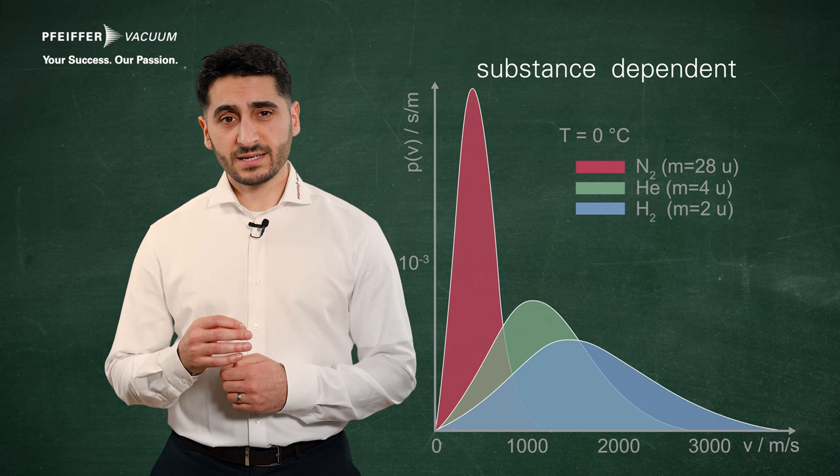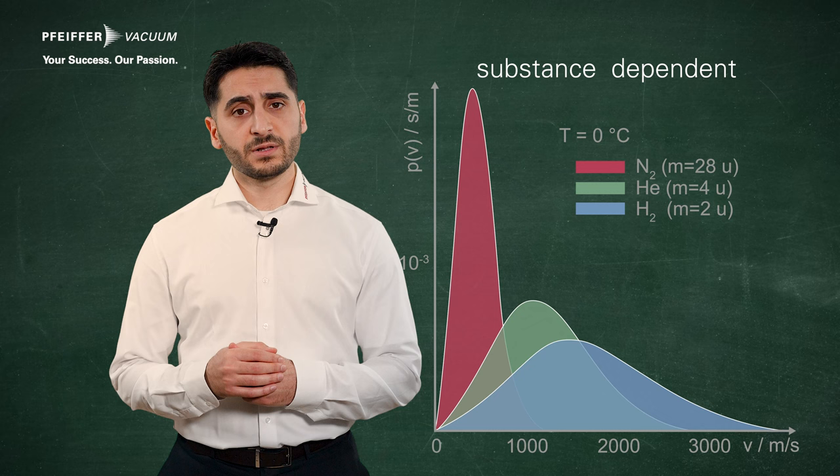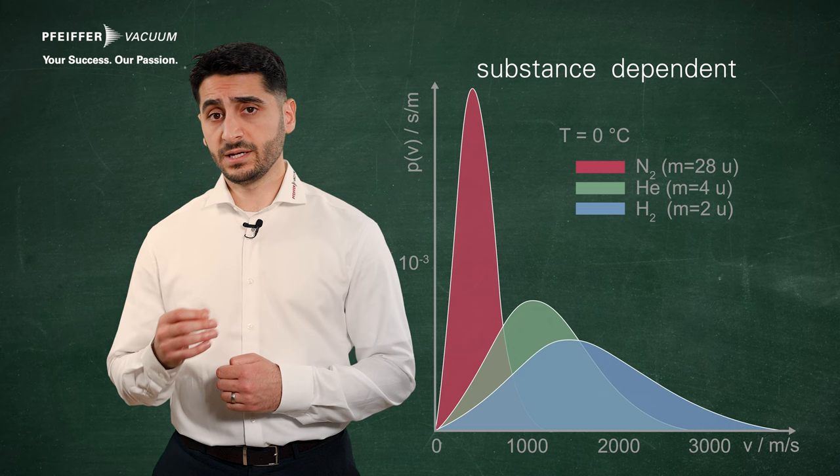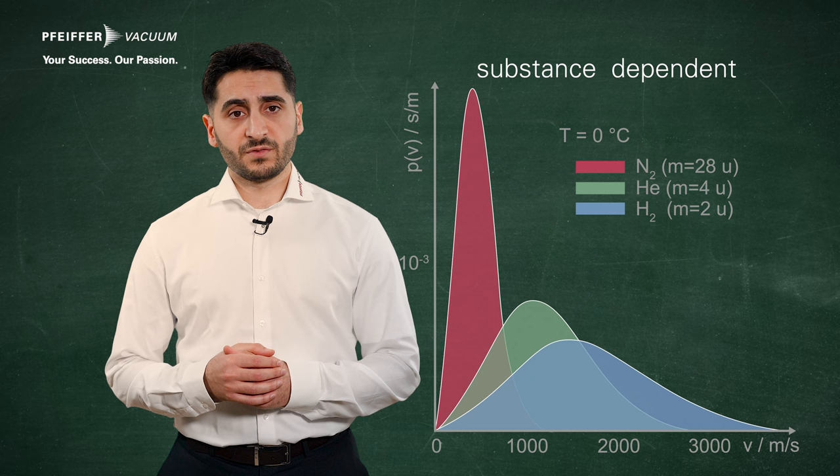In the substance dependent form of representation, we can see that light particles are faster on average than heavy particles. As an example, we see the comparison of the velocity distributions of nitrogen, which is heavier than helium, and helium, in turn, is heavier than hydrogen.